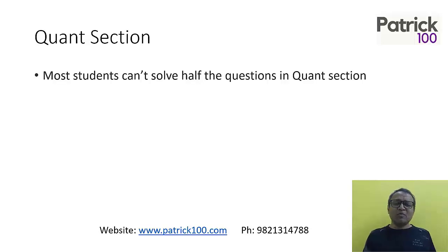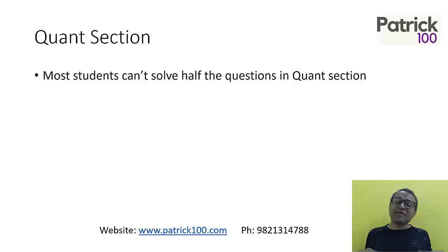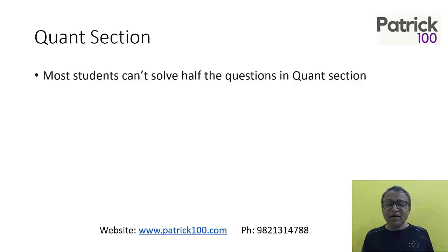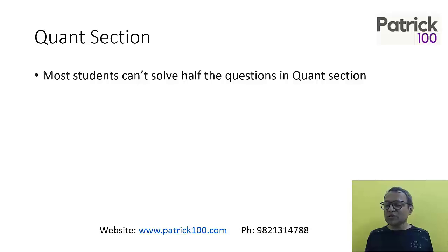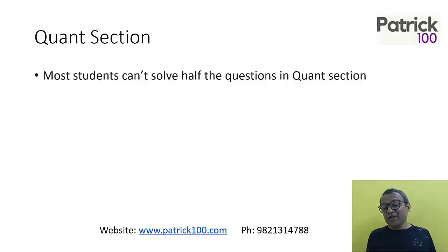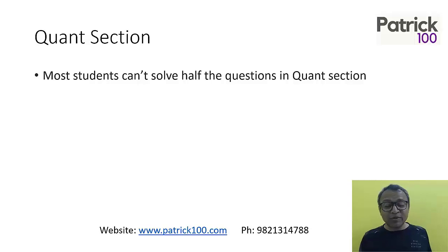In the CAT Quant section, most students can't solve half of the questions. Last year, it was even lesser than that. In a normal Quant section of average difficulty level, half the questions most students can't solve. Previously, it was even more — two-thirds of the questions people could not solve.